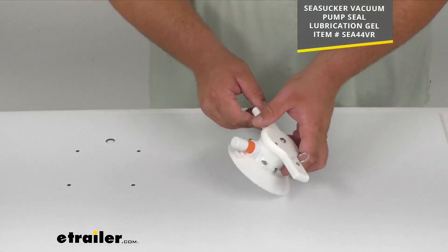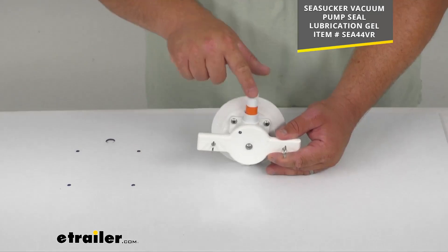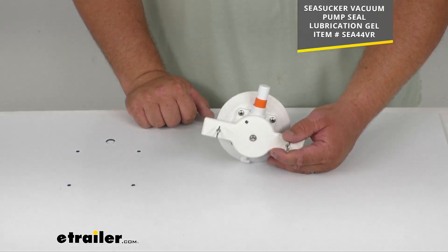I do recommend you get some lubrication gel sold separately. That's going to lubricate the seals inside the pump, keep everything working nice and good. It's waterproof lubricant. It is sold separately. I'll put that item number up on the screen there for you.